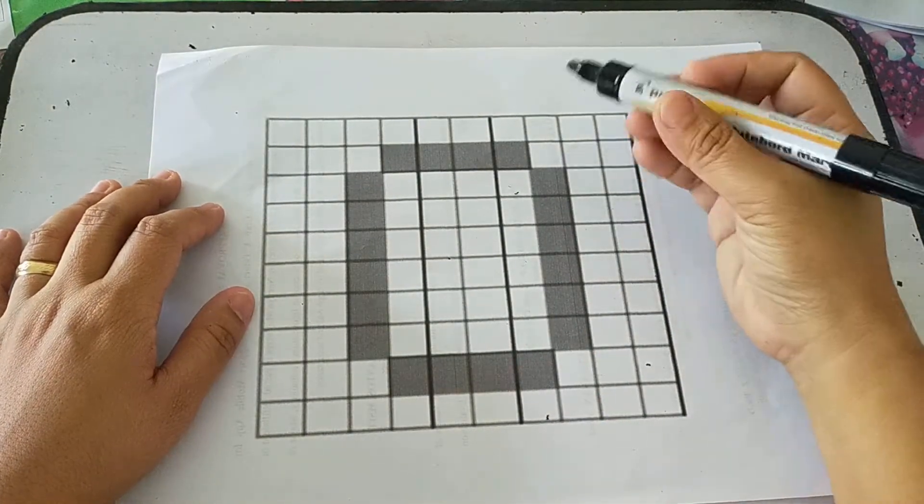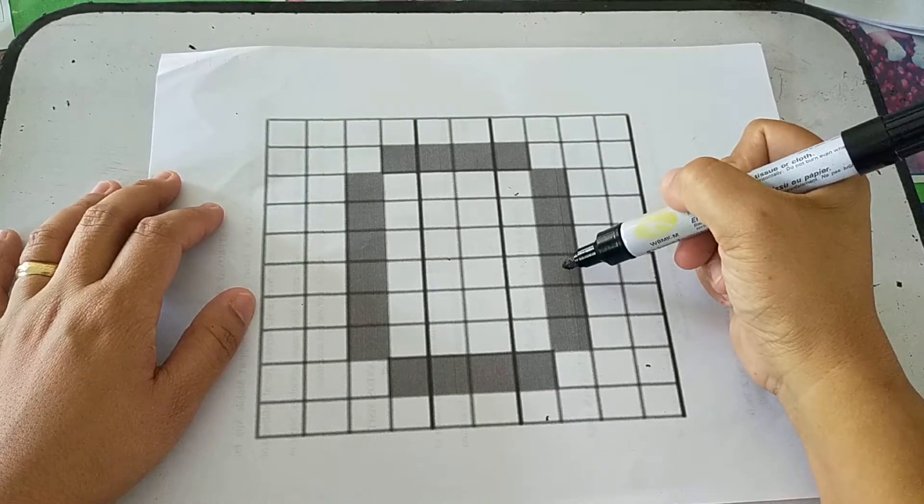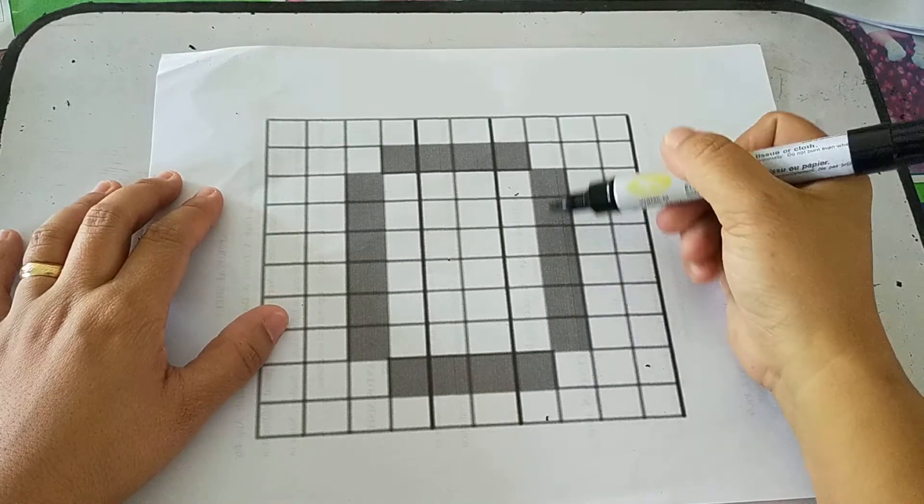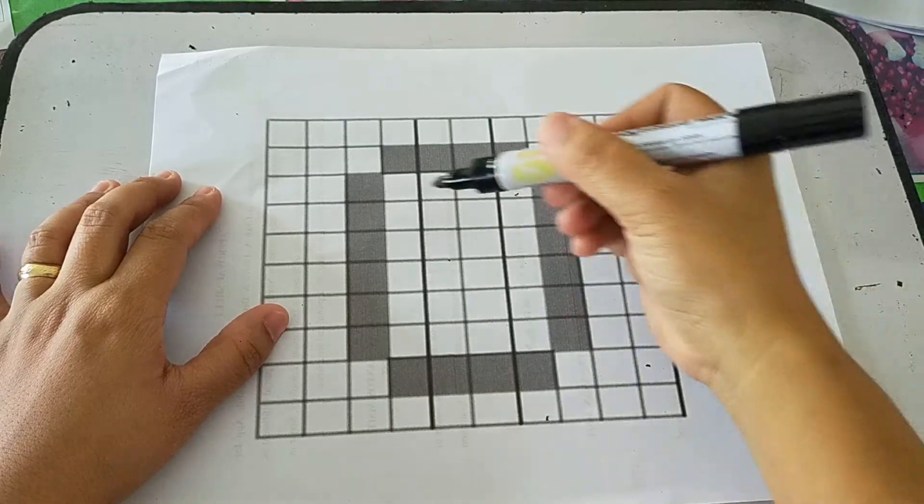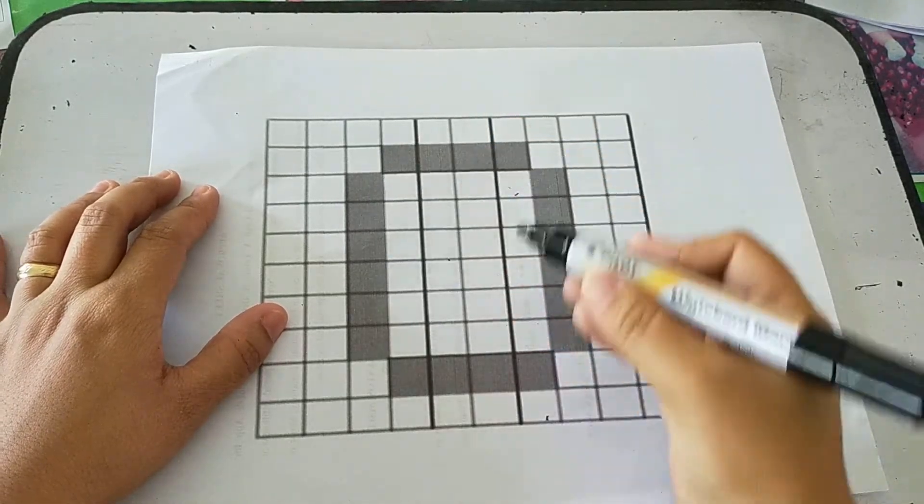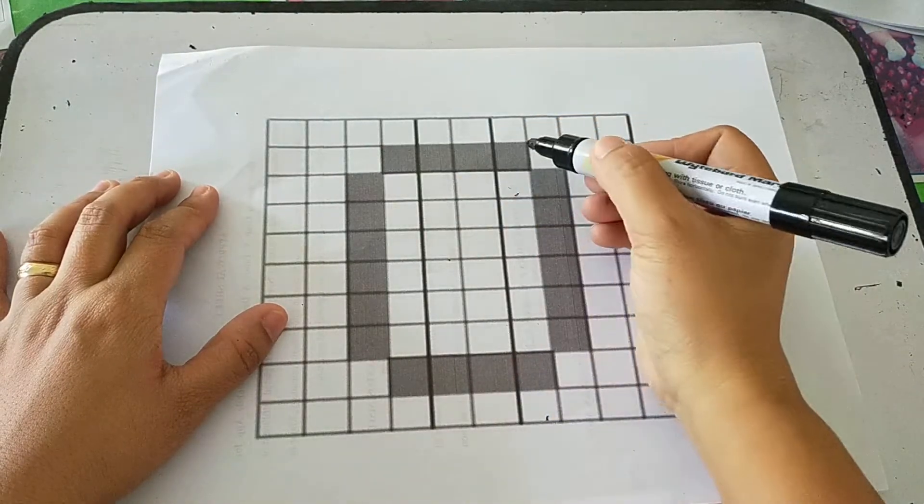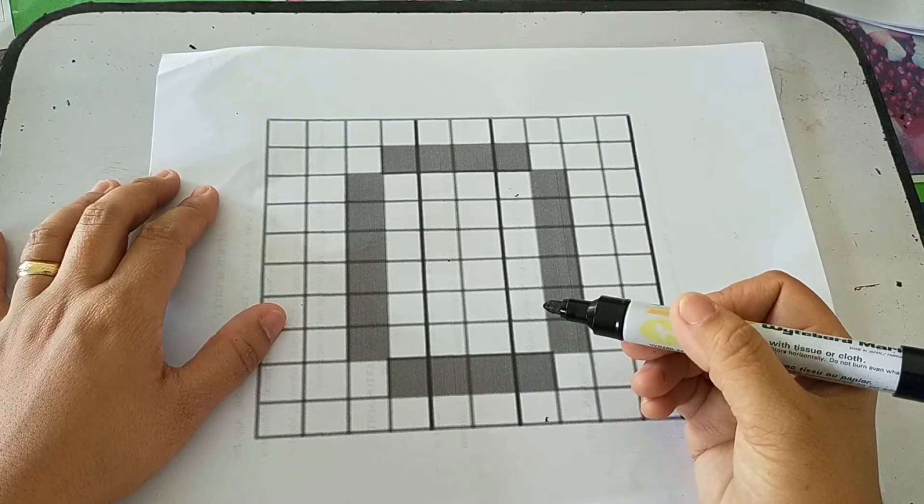So let's count the number of shaded parts. 1, 2, 3, 4, 5, 6. So that means 6 here, so 6 also here. So 12. And then 1, 2, 3, 4. So that means 4 also here. So 12 plus 8 is 20.